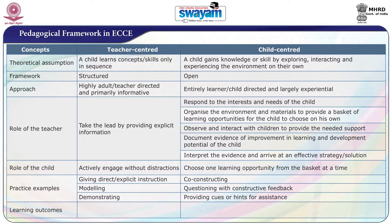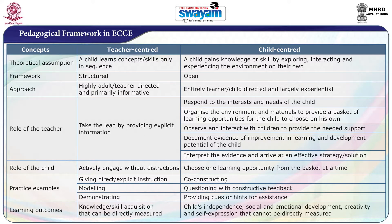What would be the learning outcome of the teacher-centered approach? It is all about knowledge or skill acquisition that can be directly measured. Whereas, in the child-centered approach, the child's independence, social and emotional development, creativity, and self-expression are the outcomes — but these cannot be directly measured.